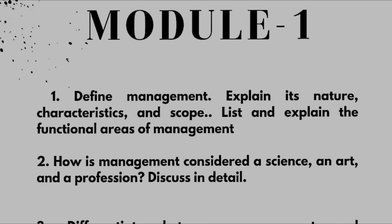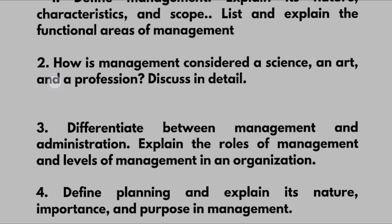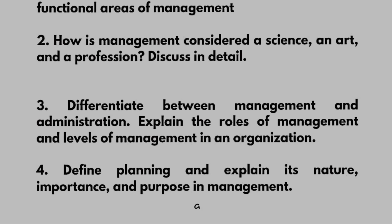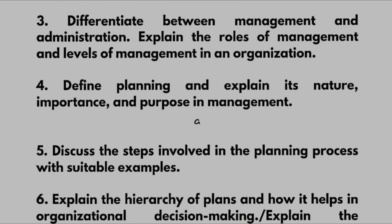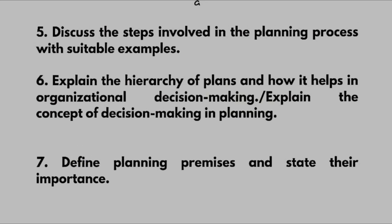List and explain the functional areas of management — this may be a 10-mark question. Next 10-mark question: How is management considered as a science, art, and a profession? Discuss in detail. Next: Differentiate between management and administration, and explain the roles and levels of management in an organization. From the planning part: Define planning and explain its nature, importance, and purpose in management. Also discuss the steps involved in the planning process with suitable examples, the hierarchy of plans, how it helps in organizational decision making, and the concept of decision making in planning.